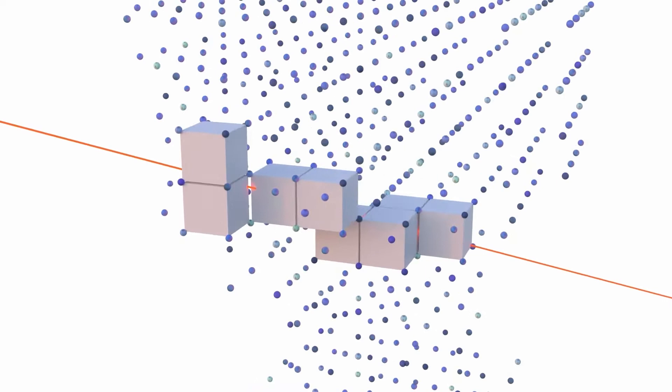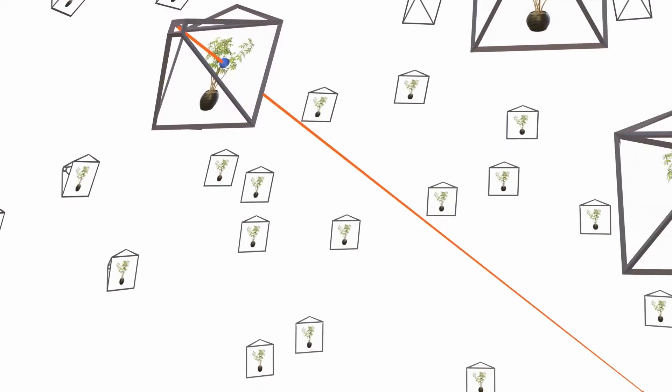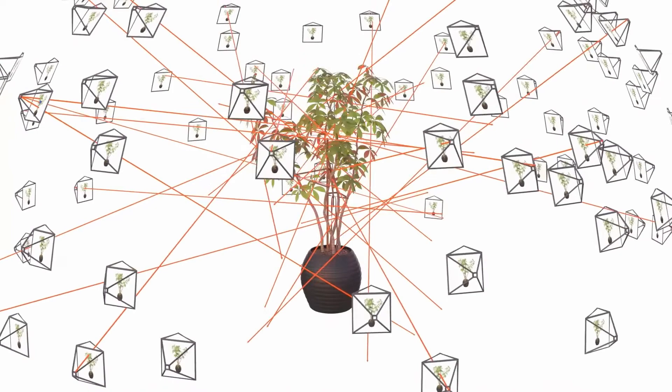We evaluate the plenoptic function at regular intervals along the ray, using trilinear interpolation of the neighboring voxel coefficients. Finally, the ray color is determined by combining these sample values according to a volume rendering formula. We optimize our plenoxel model using gradients computed on mini-batches of training rays.